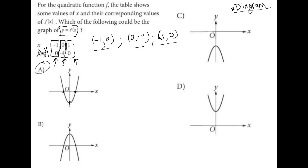Choice B, everything looks good except for the 0, negative 4, right? This could be like a 0, positive 4 so that's out.